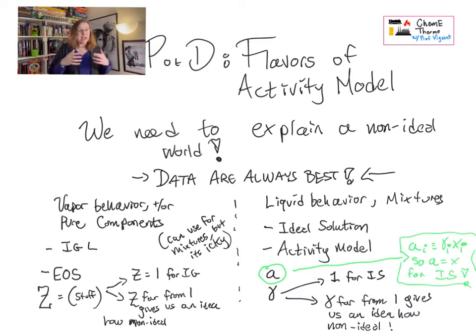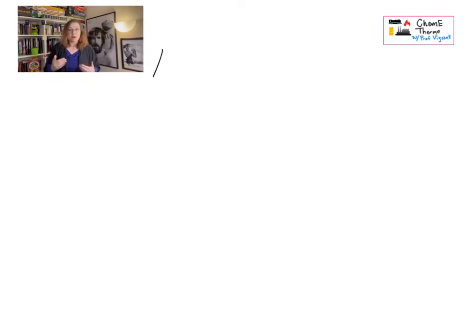Whereas an activity model is built to tell us how far things are from an ideal solution. Once you have a mixture that's changing phase and not behaving as an ideal solution, you already know you are far away from ideal gas. That's why I prefer activity models. You'll note if you go look at your textbook, it has a chapter we skip on how equations of state can be used for modeling mixtures.